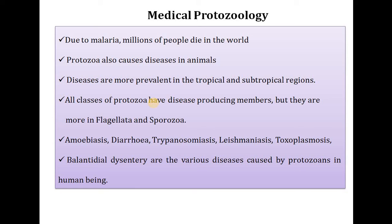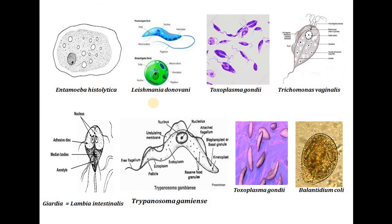Medical protozoology is one of the important branches of parasitology. Examples of protozoan parasites include Entamoeba histolytica, Leishmania, Toxoplasma, Trichomonas, Trypanosoma, Giardia, Toxoplasma gondii and Plasmodium.